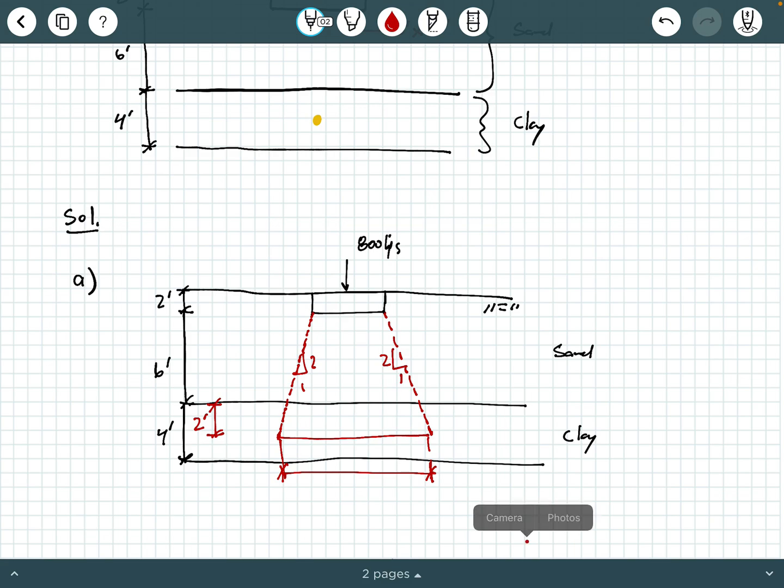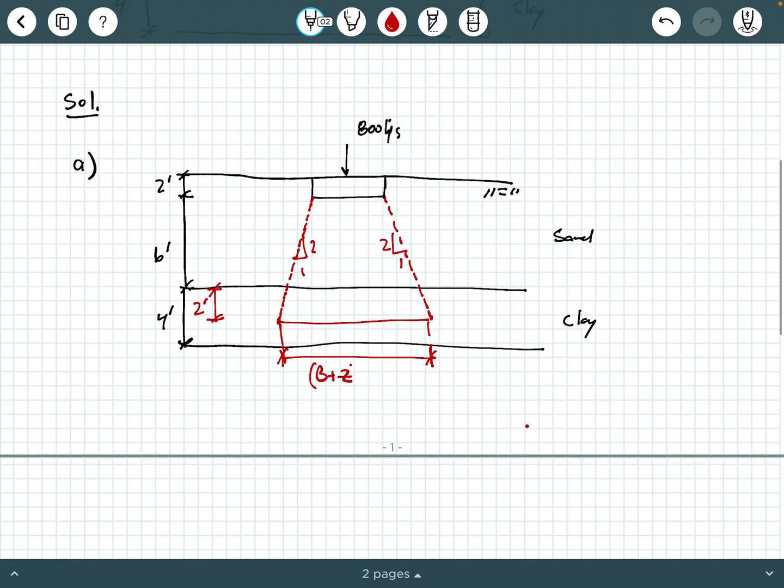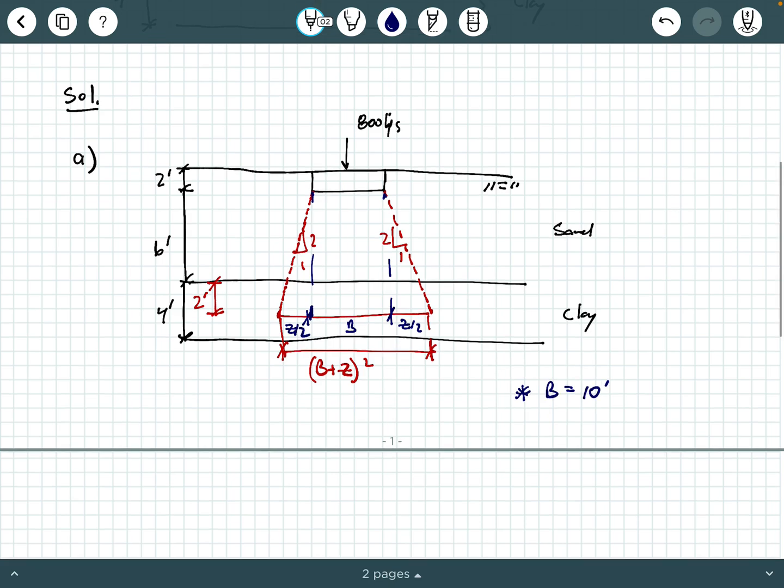Down here at the bottom, as we've discussed before, this is your projected area that you're interested in. So if you notice, your projected area here is going to be B plus Z squared, so B plus Z times B plus Z. If you look back in your notes, this dimension right here is B, which is 10 feet. And then this is Z over 2 and Z over 2 because you drop down at a ratio of 2 to 1 horizontal. So B is 10 feet.